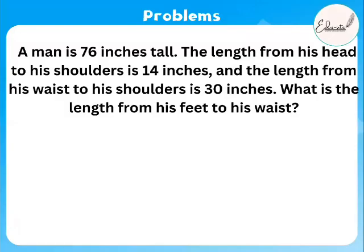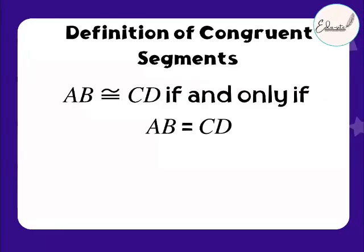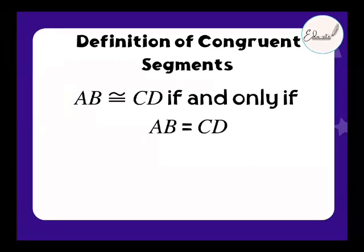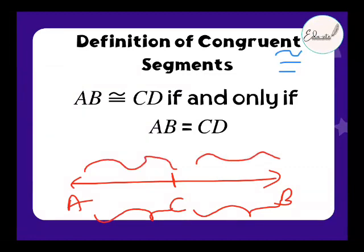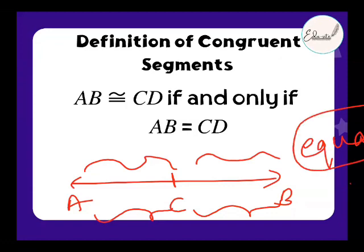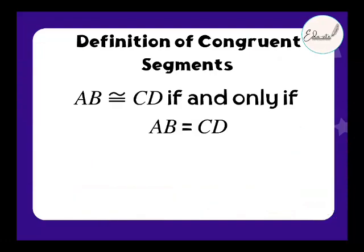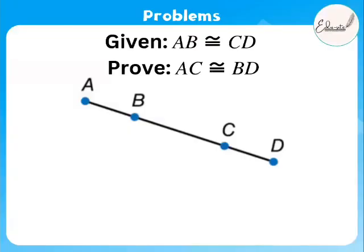We dealt with Segment Addition Postulate. Now there is a congruency rule. Congruence means: if something is equal — same shape, same sides, same angles — we say it is congruent. If A, B, C are three points and AC = CB, then AC is congruent to CB. To prove congruency in triangles, three things must be satisfied: equal shape, equal sides, and equal angles.